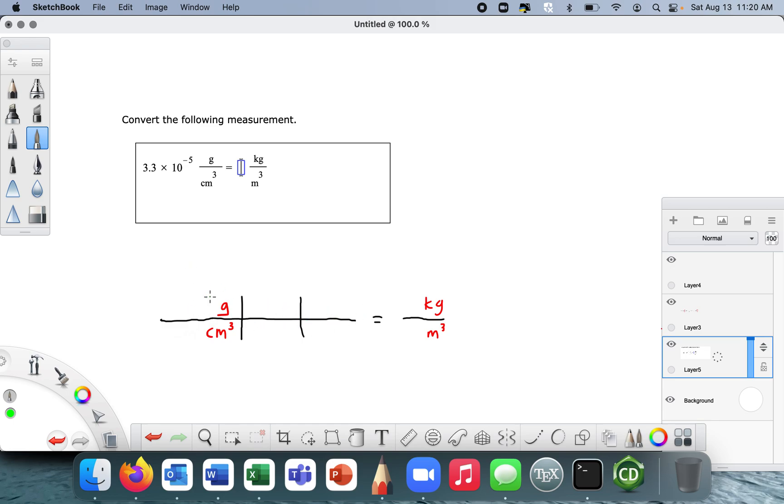So we'll put the numbers in last. Obviously, setting up the conversion is by far the most important. So first of all, let's go from grams to kilograms. Well, if we're going to go from grams to kilograms, we've got to cross off grams, right? And we've got to introduce kilograms.